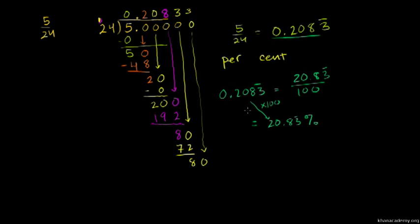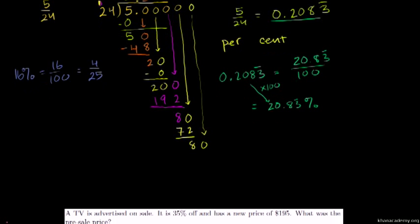If we have 16 percent, we convert it to a fraction. 16/100, which simplifies to 4/25.